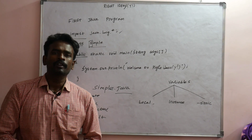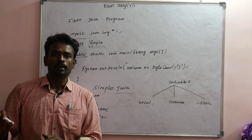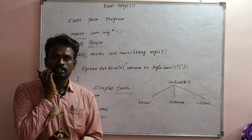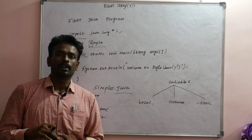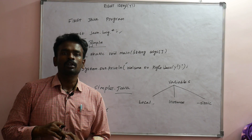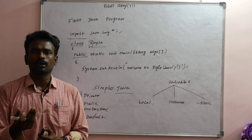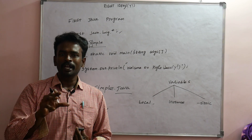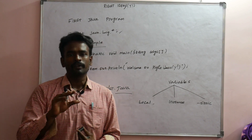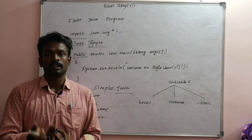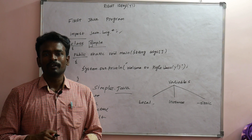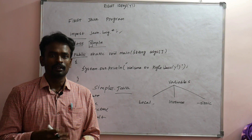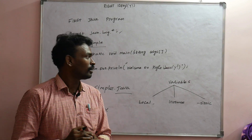Private means restricted access — like a private party, only specific members can access it. For example, your Google username and password are private. Public means open to all. Using private access makes Java secure. Java's security feature comes from controlling access through private and public specifiers.